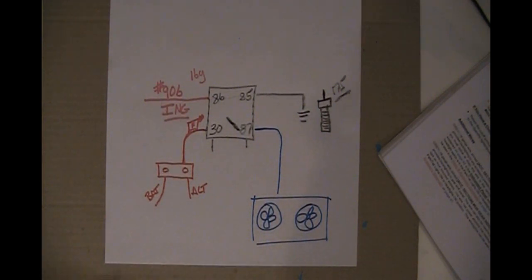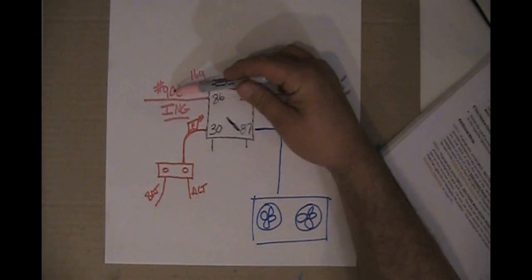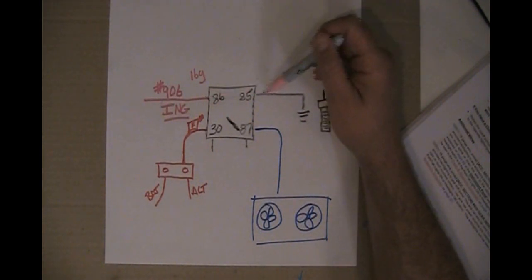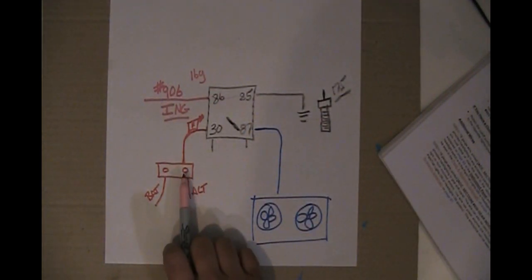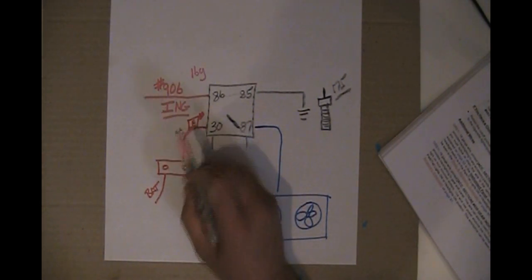The things that you have to remember is you cannot hook the fans directly to 906. You can't do it. You have to go through a relay. The fans have to be connected directly from a battery source.